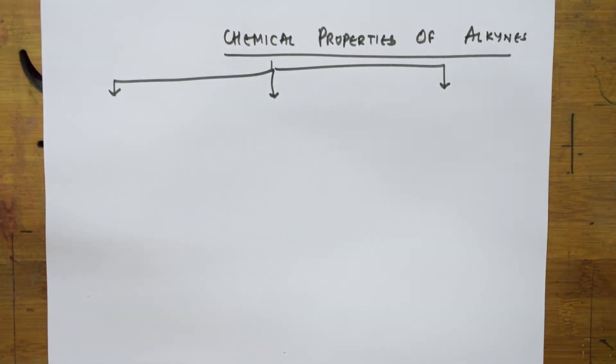Welcome students to the next session of your hydrocarbon chapter. We are almost coming to the end of the chapter. I am just left with the chemical properties of alkynes and then I will be jumping into the benzene compound. There we will be studying about the different reactions shown by benzene, aromaticity of benzene, resonance of benzene, and orbital diagram of benzene.